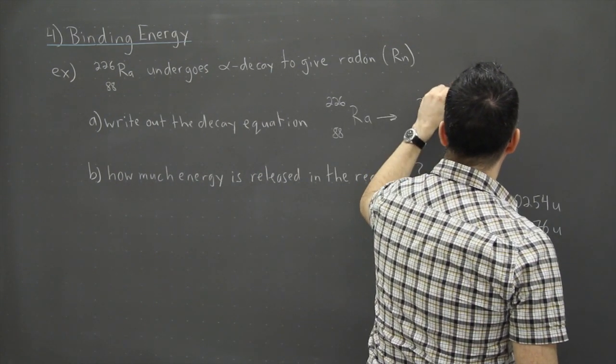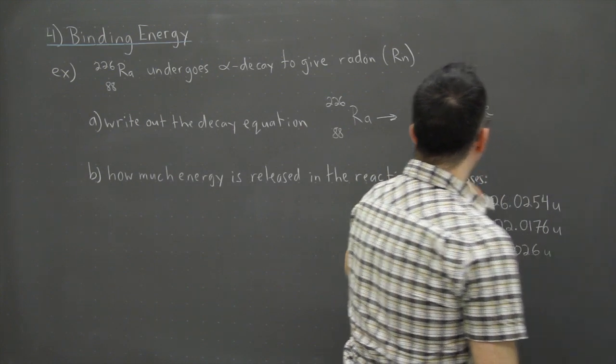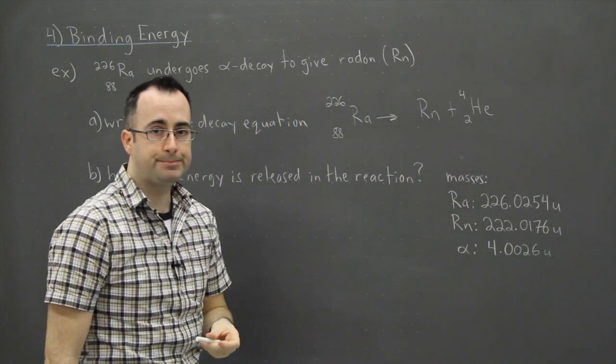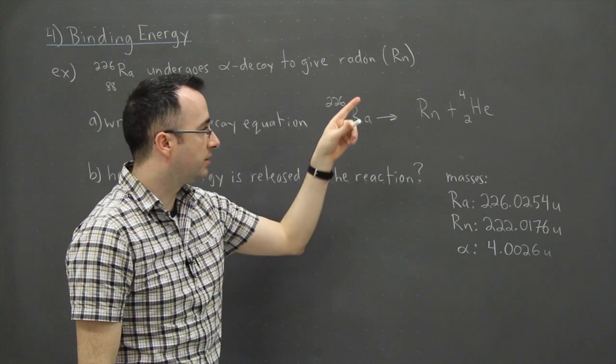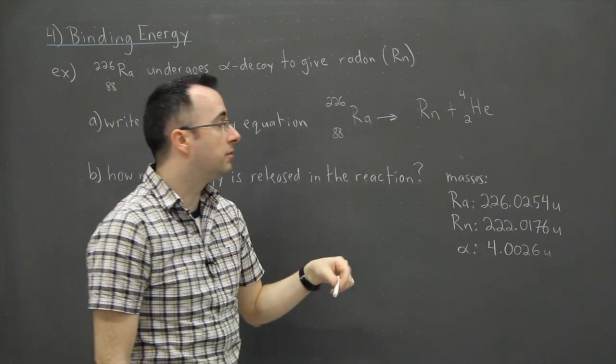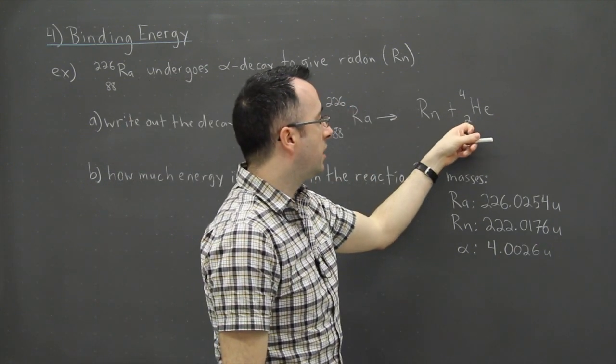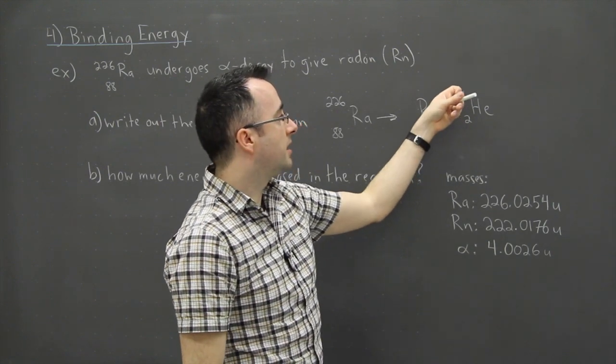If you remember what an alpha particle is, it's a helium-4. So I'm going to write down helium, the 4, and a 2 as the atomic number here. The mass number and the atomic number, a 2 goes on the bottom, that's the number of protons, and it's got four nucleons.